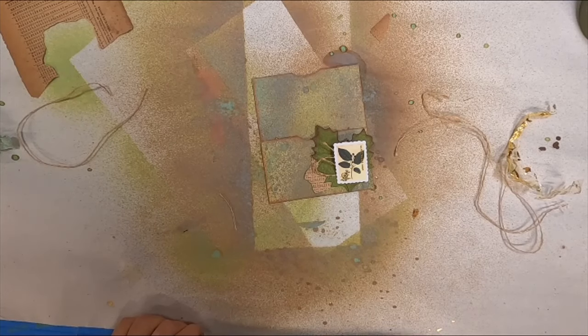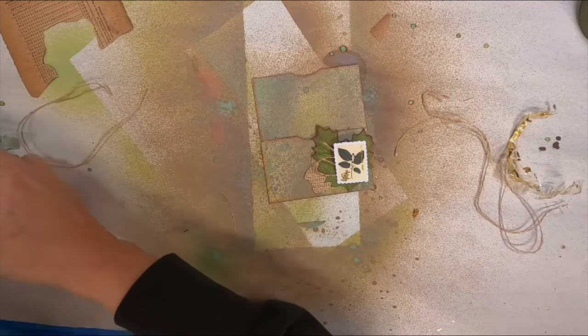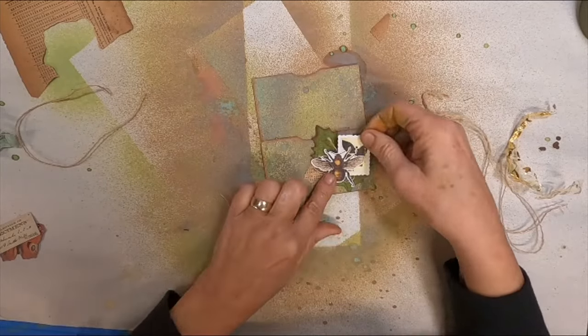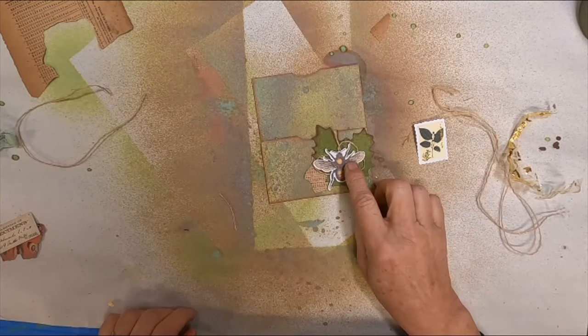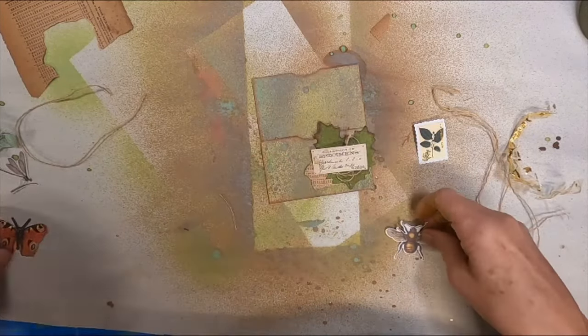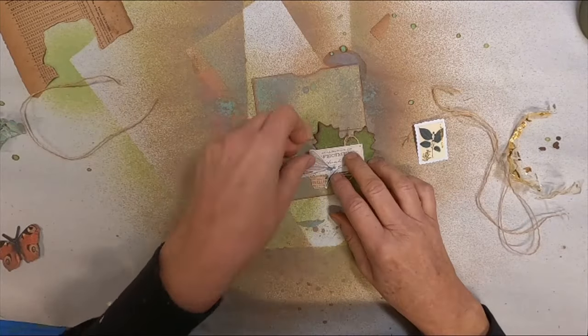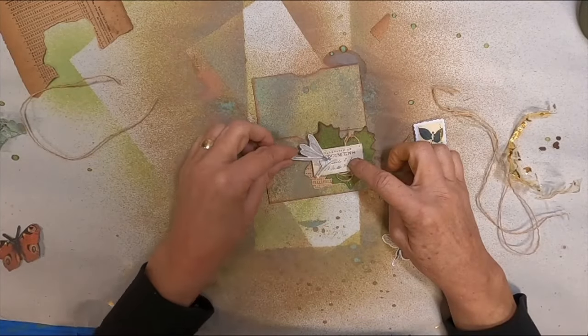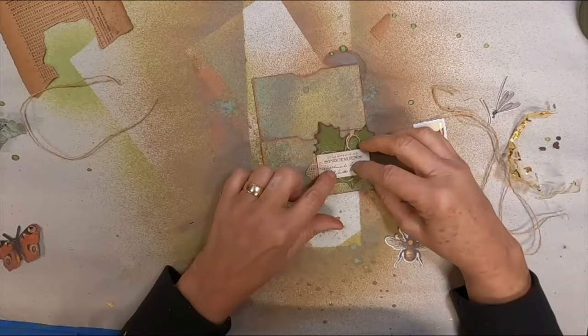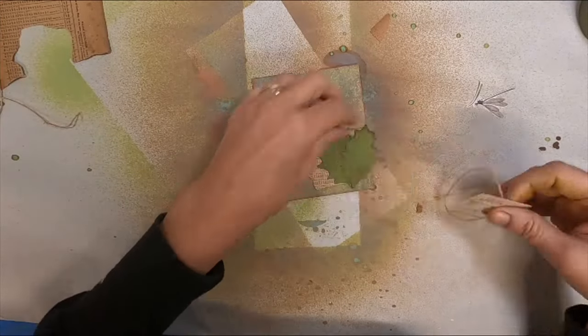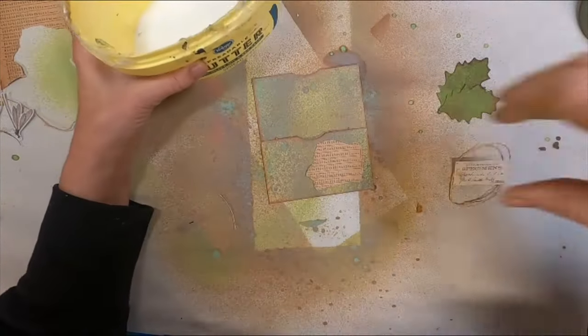And now for something to kind of create a little bit of a focal. So I'm looking at this stamp. It seems a little too bright for what I am doing. So I'm sorting through. I found this little bug. And that might be an option. But I also found this little card that says specimen on it. And I think that's what I'm going to choose. Do I want to add the dragonfly? I don't think so. I think we'll go with just the little specimen designation card. So let's glue that down.